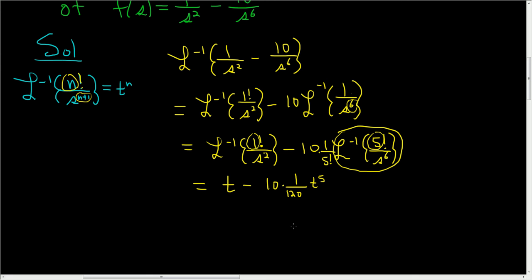So the final answer is t minus—and then 10 over 120 is 1 over 12—t to the 5th. And that's it.